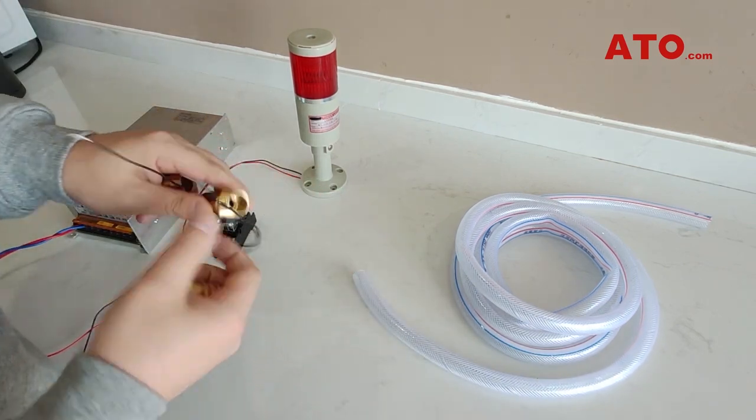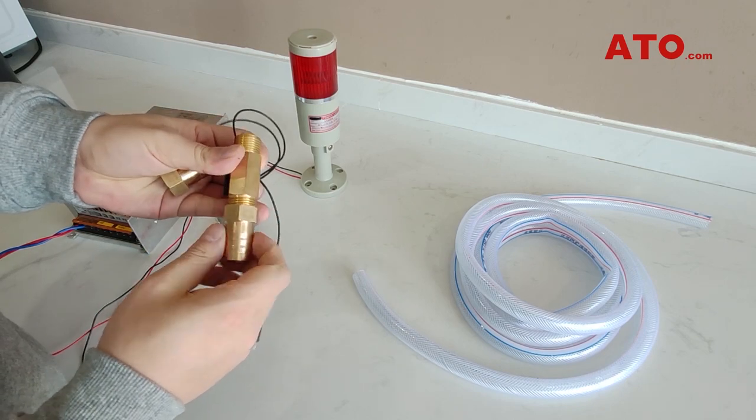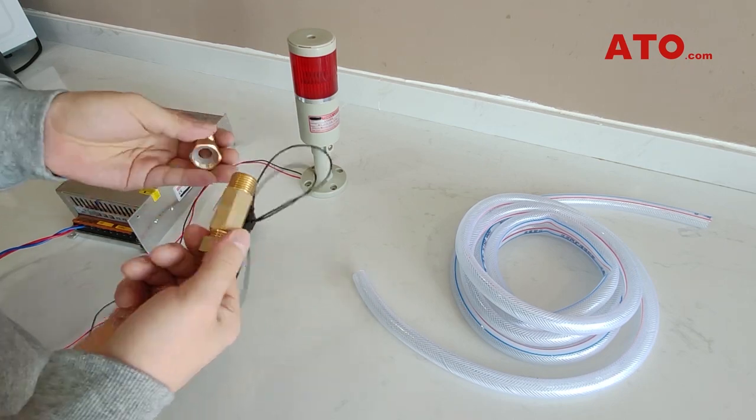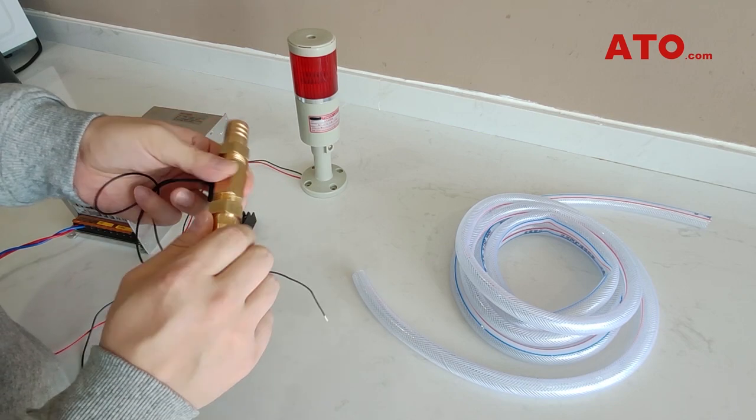The magnetic water flow switch from ATO features G 1.5 inch joint size at both ends. Here we prepare two pagoda joints for the ease of joining up the water pipe and the switch.